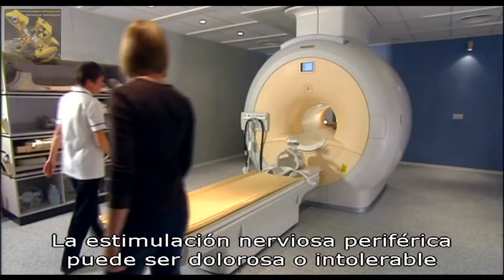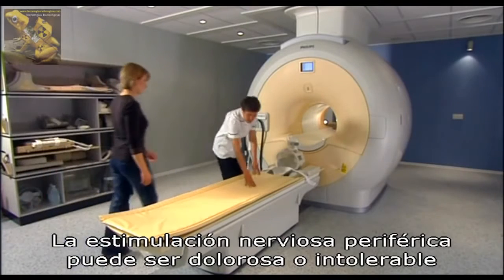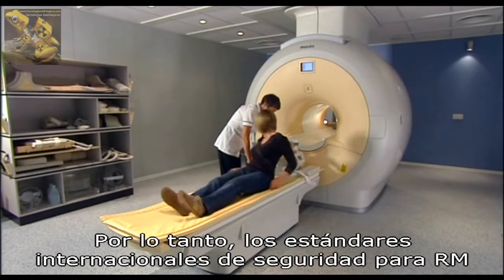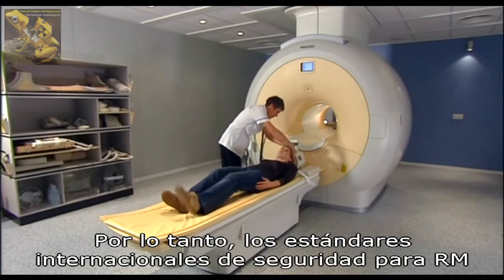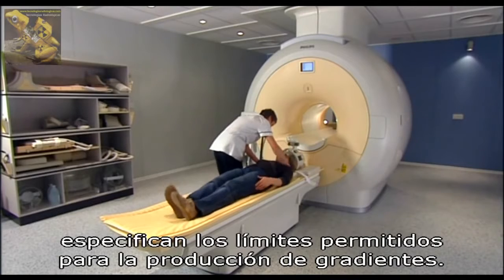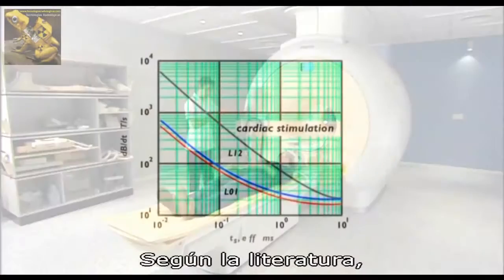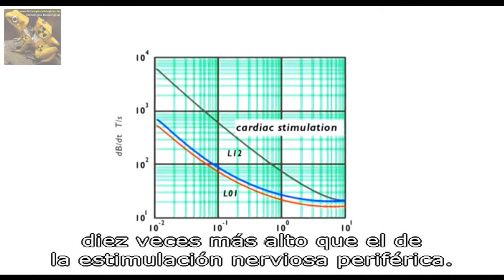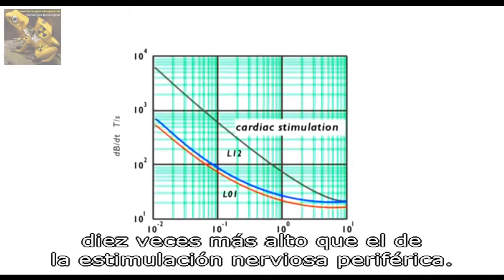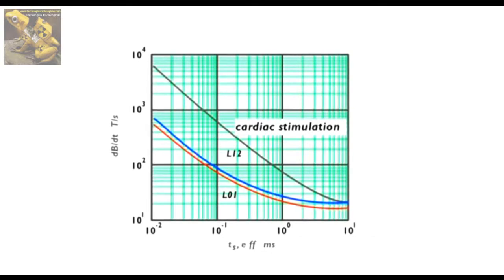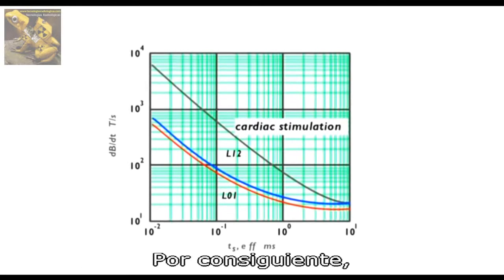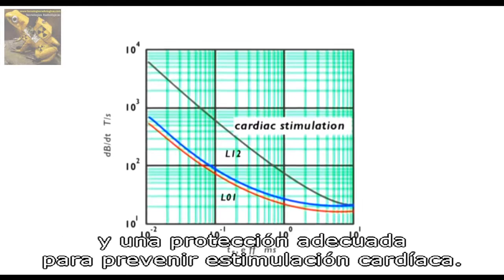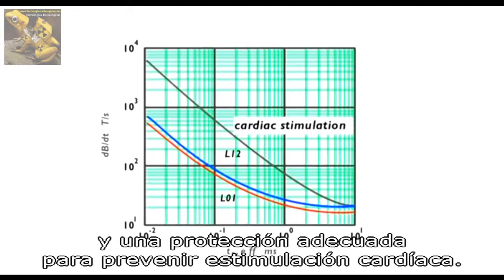Peripheral nerve stimulation can become painful or even intolerable at the stronger gradients of modern MR systems. Therefore, international MR safety standards specify limits for the allowed gradient output. From the literature it is known that the threshold level for cardiac nerve stimulation is about a factor of ten higher than that for peripheral nerve stimulation. Consequently, the occurrence of peripheral nerve stimulation provides a good warning and protection level for preventing cardiac stimulation.